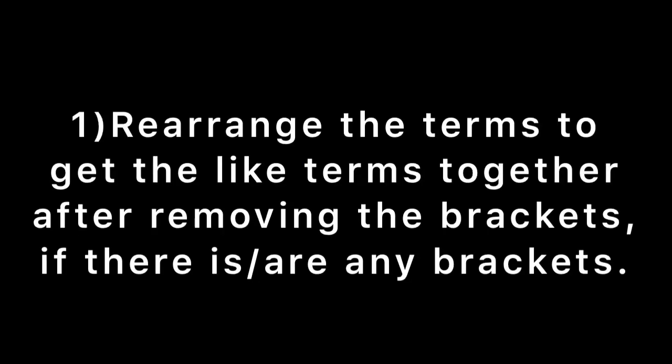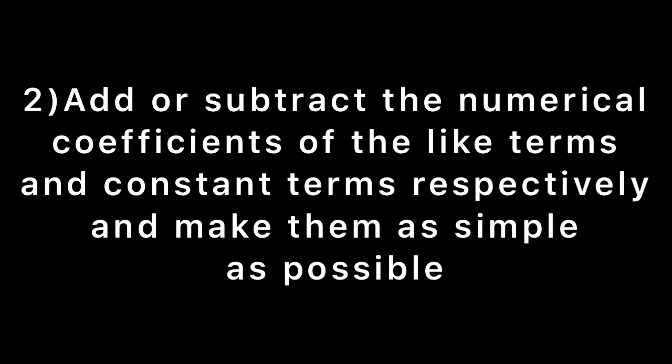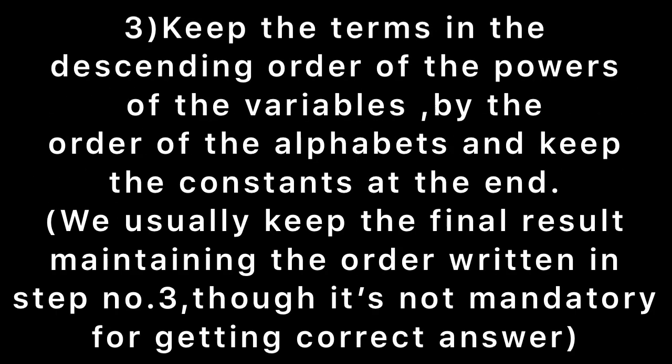Today we are going to do sums on addition and subtraction of algebraic expressions. Before this is the question of today, to get the addition or subtraction of algebraic expressions, we'll follow some steps. Step one: rearrange the terms to get like terms together after removing brackets if there are any. Step two: add or subtract the numerical coefficients of like terms and constant terms respectively. Step three: keep the terms in descending order of powers of variables and keep constants at the end.